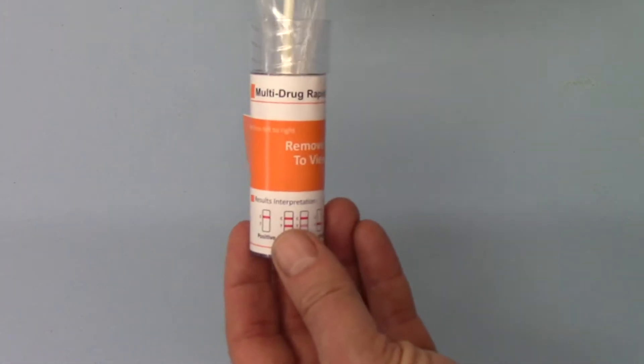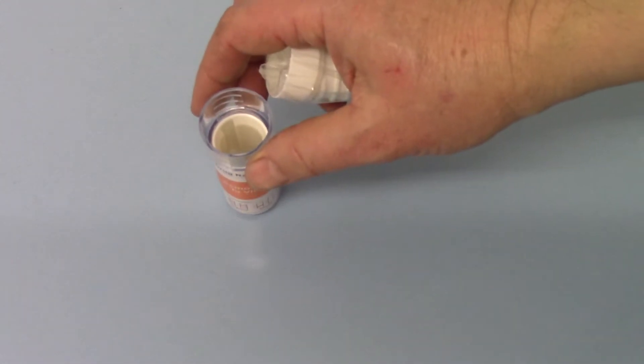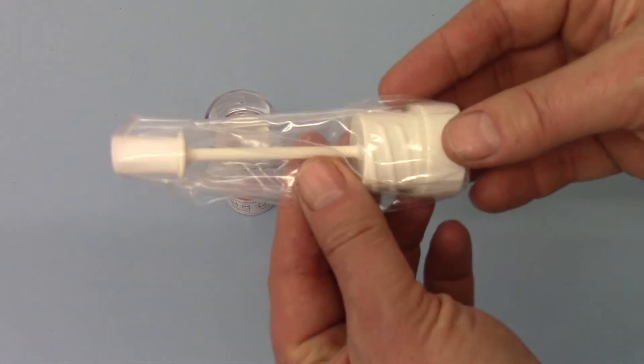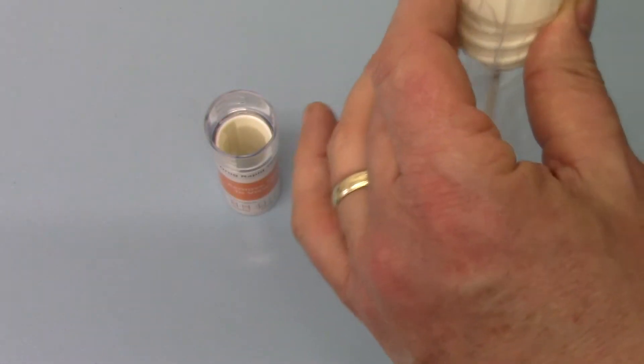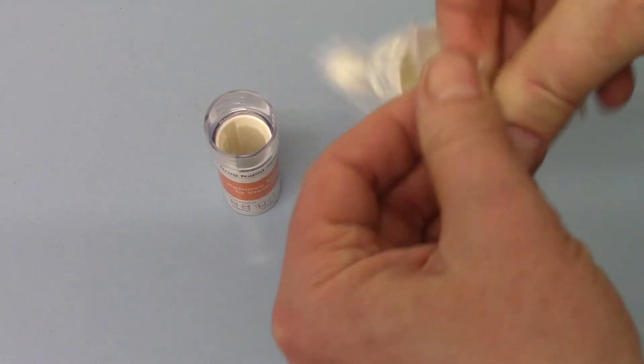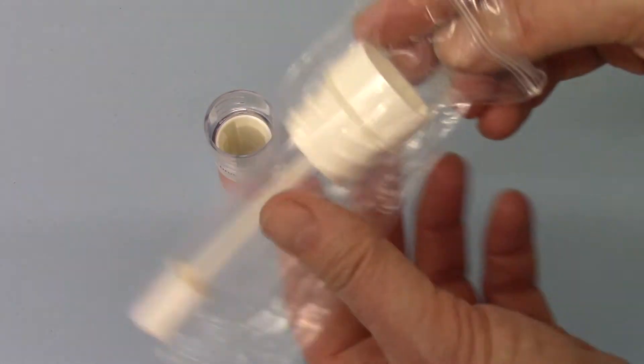And this is the actual test device. You'll see it comes in two parts. The swab collector, which is in its own little plastic pouch which has to be opened. This is resealable for disposal.